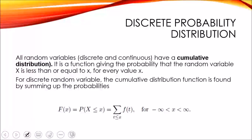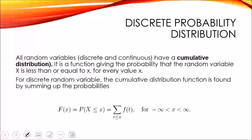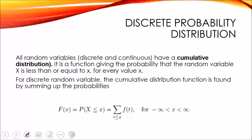But what is the formal definition of a cumulative probability distribution? It is a function giving the probability that the random variable x is less than or equal to x for every value of x. So in other words, in discrete random variable, it is just the sum of all the probabilities. To get the cumulative, it is just by summing up the probabilities of every random variable.